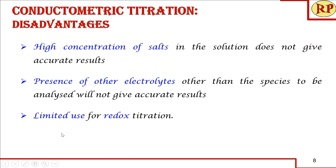There are some disadvantages and limitations. When high concentrations of salts are present, accurate results are not obtained. The presence of other electrolytes with ionic conductivity will also contribute to the measured conductance and compromise accuracy. Additionally, conductometric titration is not well-suited for redox titrations.